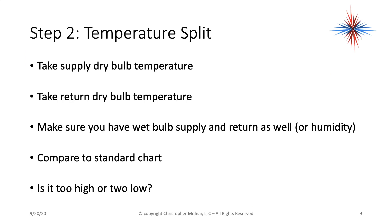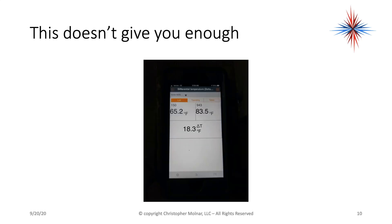Then we go inside and take a look at the temperature splits. We take our supply dry bulb temperature and our return dry bulb temperature. We make sure we have a wet bulb of each as well, or the humidity. We compare it to a standard chart. Is it too high or too low? Just standard dry bulb temperatures alone does not give you everything you need.